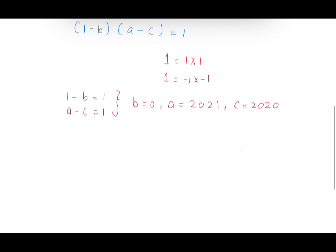Using negative 1 times negative 1, we'll have 1 minus b equals negative 1 and a minus c equals negative 1. When we solve, we'll find that b equals 2, a equals 673, and c equals 674.